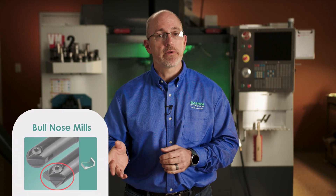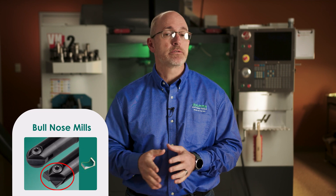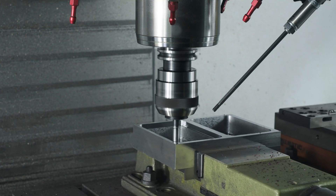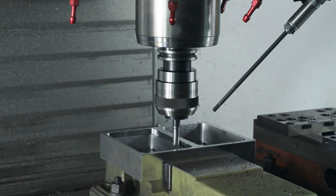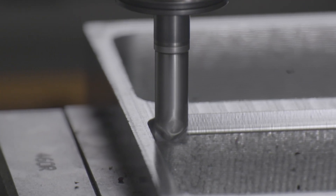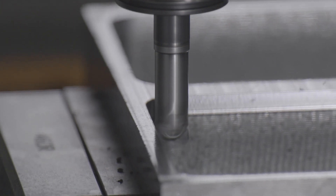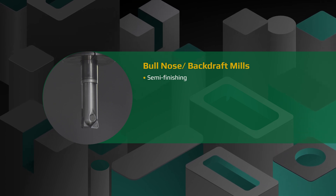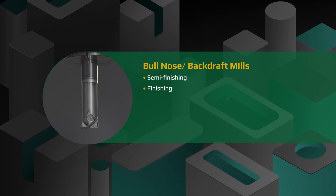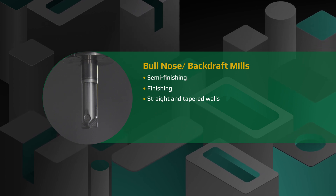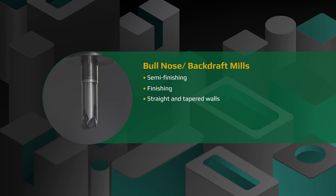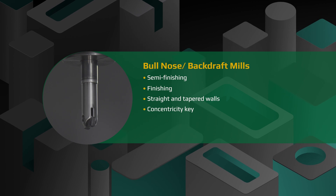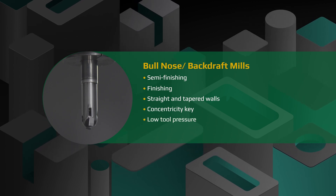Bull nose or backdraft style tools provide another excellent finishing tool choice, especially for straight or tapered walls. Accuracy is again paramount here as the corner radius and wiping action of the tool is depended on for tight part tolerances and fine surface finishing. Backdraft tools minimize surface contact, reducing deflection and helping assure accuracy in both semi finishing and finishing applications. Bull nose or backdraft tooling can be utilized in multiple directions, allowing both profile and plunge finishing techniques to be used.